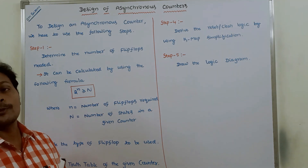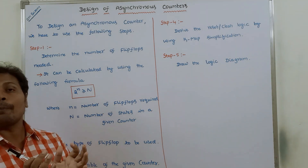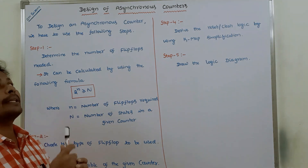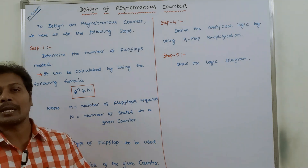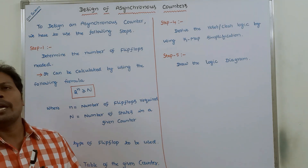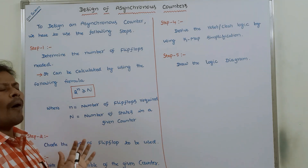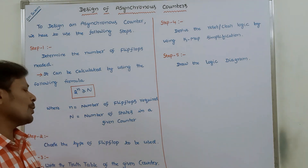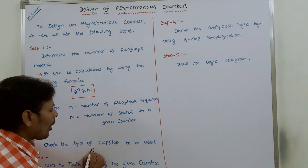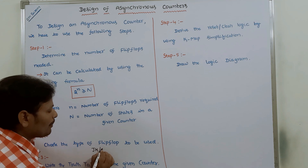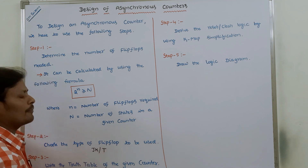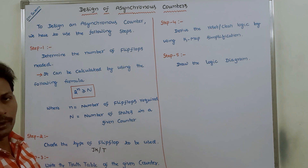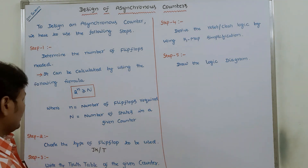Step 2: choose the type of flip-flop we have to use. In all asynchronous counters, we have to use either a JK flip-flop or a T flip-flop to design any asynchronous counter.